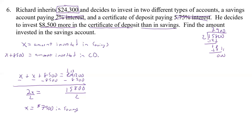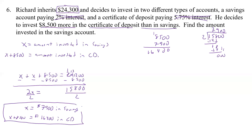How much is the CD? X plus 8,500 equals 7,900 plus 8,500, which is $16,400 in the CD. Now let's verify: 16,400 plus 7,900 equals 24,300 — that's the correct total. So Richard invests $7,900 in savings and $16,400 in the CD.